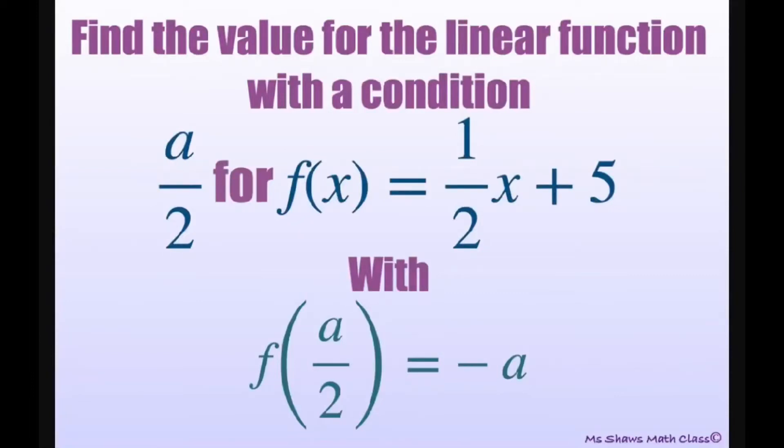Hi everyone. We're going to find the value for the linear function with a condition. So our condition is a divided by 2 for f of x equals 1 half x plus 5. We also have f of a divided by 2 equals negative a.